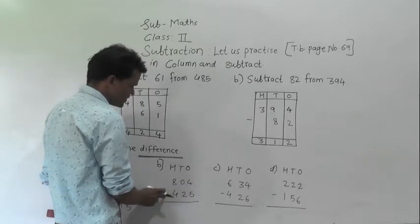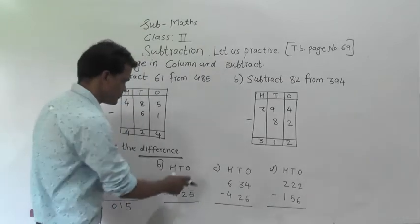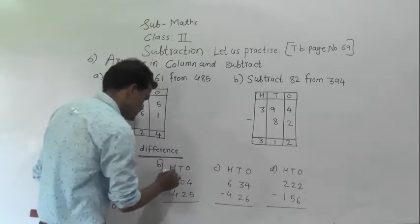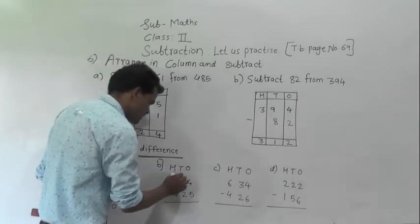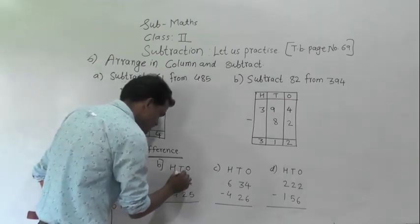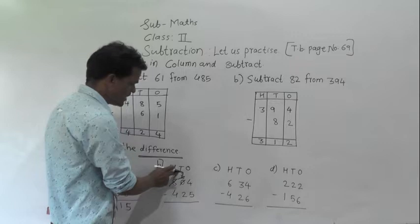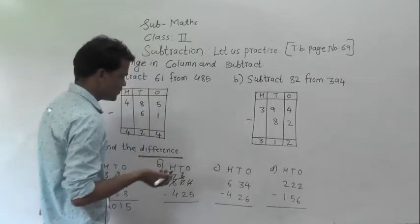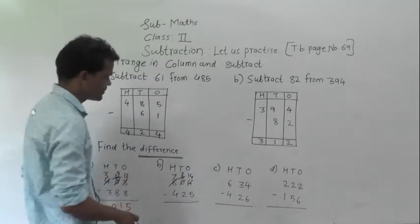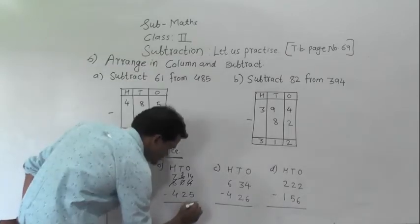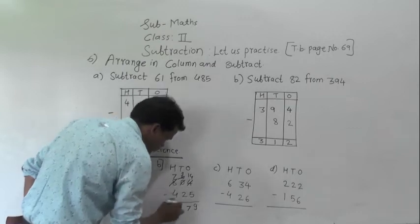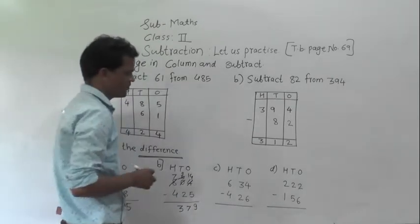Next: 804 minus 425. Here 4 minus 5 is not possible and tens place is also 0. So regroup 8 hundreds into 7 hundreds and 10 tens. Out of 10 tens, give 1 ten to the ones place, leaving 9 tens. 10 ones plus 4 ones equals 14 ones. Now subtract: 14 minus 5 is 9, 9 minus 2 is 7, 7 minus 4 is 3. So 379 is the answer.